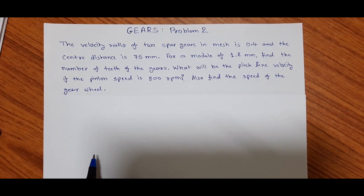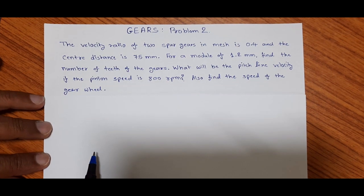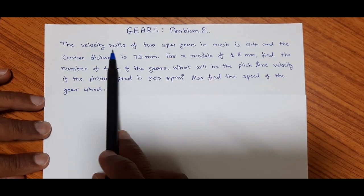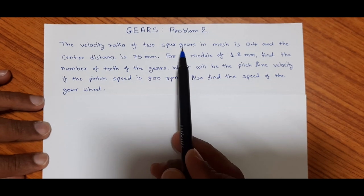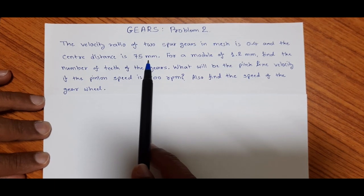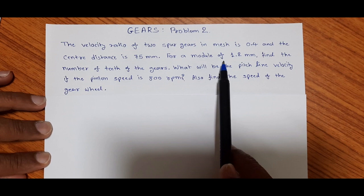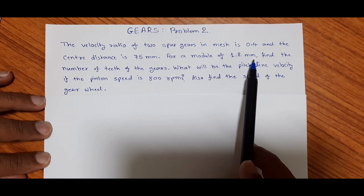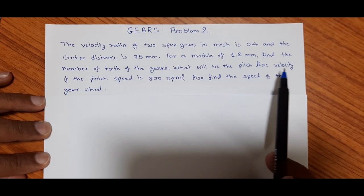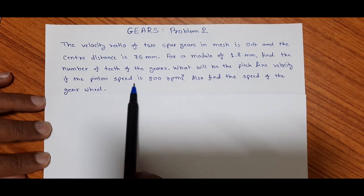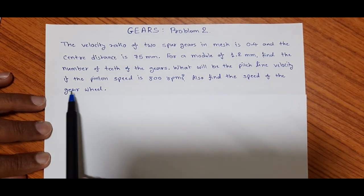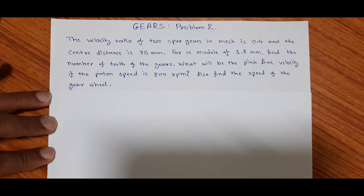Let us solve the second problem on gears. The data of the problem is: the velocity ratio of two spur gears in mesh is 0.4, the center distance is 75 millimeters, and the module is 1.2 millimeters. Find the number of teeth of the gears, the pitch line velocity if the pinion speed is 800 rpm, and the speed of the gear wheel.